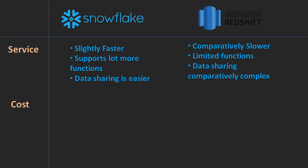When it comes to cost, Snowflake has a pay-as-you-go model — if you're using less, you pay less, and if you're using more, you pay more. It has lower cost for small-scale use. For example, if you're storing two to three GB of data, Snowflake will cost you around fifty to sixty dollars per month.